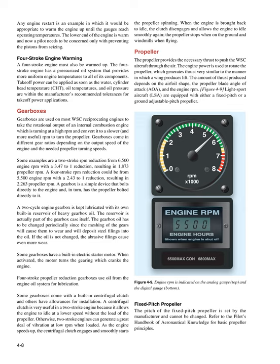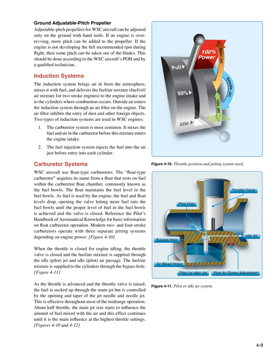The propeller provides the necessary thrust to push the WSC aircraft through the air. Engine power rotates the propeller, which generates thrust very similarly to the manner in which a wing produces lift. The amount of thrust depends on the airfoil shape, the propeller blade angle of attack (AOA), and the engine RPM. LSA are equipped with either a fixed-pitch or a ground-adjustable pitch propeller. The pitch of the fixed-pitch propeller is set by the manufacturer and cannot be changed. Ground-adjustable pitch propellers can be adjusted only on the ground with hand tools — if an engine is over-revving, more pitch can be added; if the engine is not developing full recommended RPM, some pitch can be taken out of the blades.